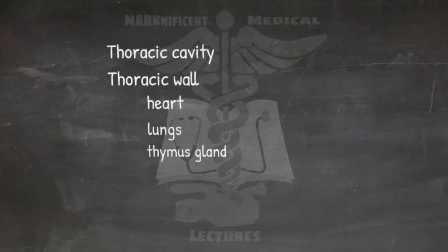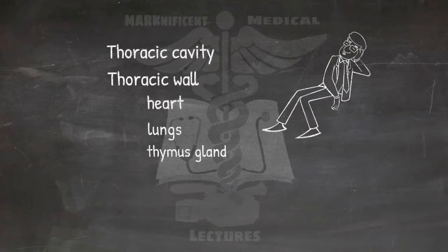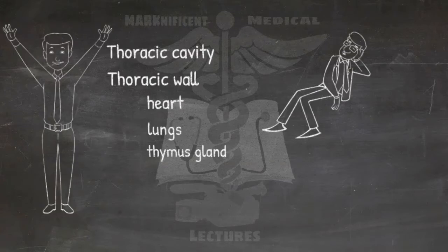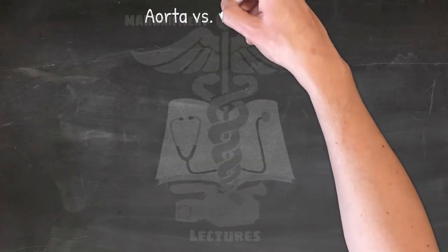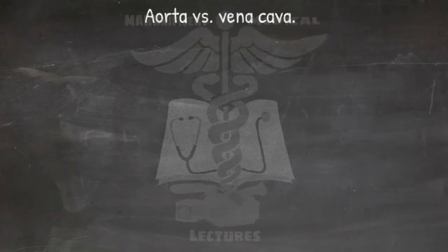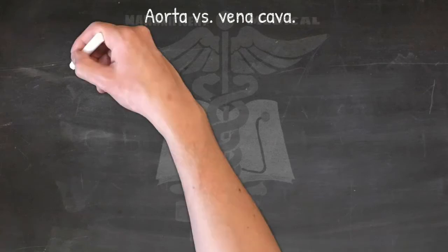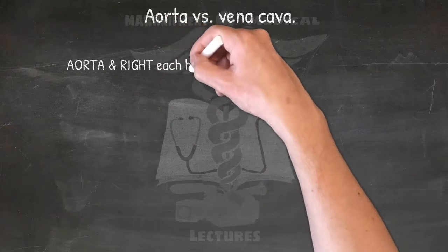Remembering and relating to these structures and their associations could be a lot of information. Studying anatomy and remembering all the information is definitely exhausting and time consuming. To ease your studies, here are some mnemonics to help you remember — starting with aorta versus vena cava: which is right and which is left?